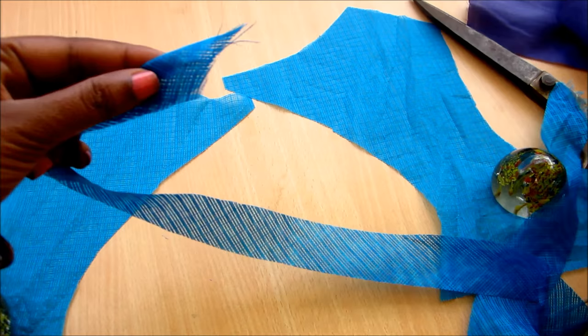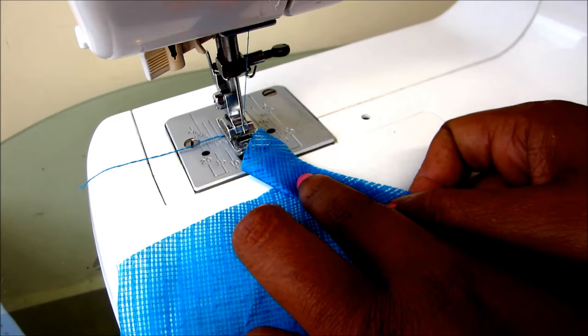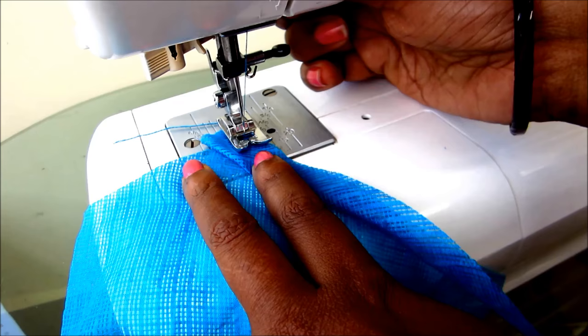Now I'll place the right side of the bias on the right side of the bodice, align and start sewing, turning from the neckline.